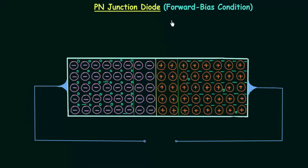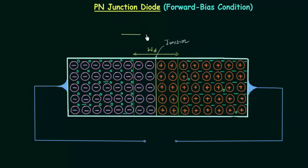We have already completed the no-bias condition of the PN junction diode. In this lecture, we will discuss the forward bias condition. Under no-bias condition, we do not apply any external voltage source across the two terminals. The width of the depletion layer is W subscript D. We have diffusion current from left to right, called I majority, and reverse saturation current from right to left, called I subscript S, which is due to minority charge carriers.